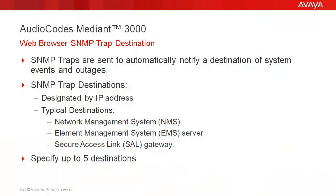The Mediant 3000 supports the automatic notification of system events and problems using SNMP traps. These traps may be sent to multiple destinations. The destinations are specified in the media gateway configuration by IP address. Typically entries correspond to a network management system, element management system server, or secure access link gateway.